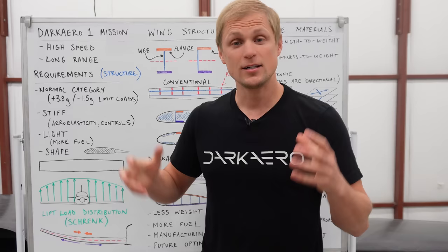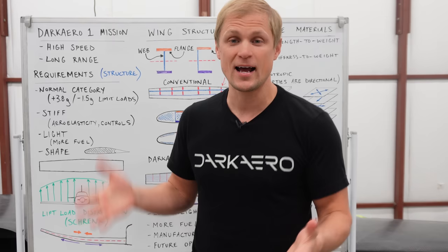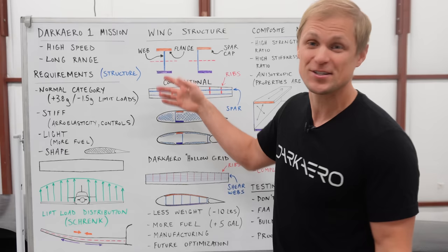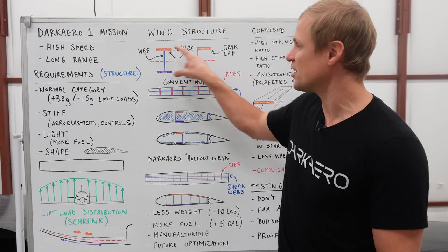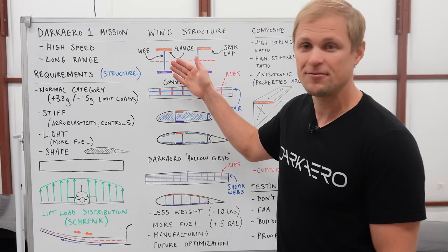A structure that's very effective at resisting bending loads is an I-beam. Maybe you're already familiar with an I-beam, which has a cross-section shape that looks like an I. The top and bottom pieces of the I-beam, these horizontal sections, are called the flanges, and then the vertical piece of the I-beam that connects the flanges is called the shear web, or just the web.